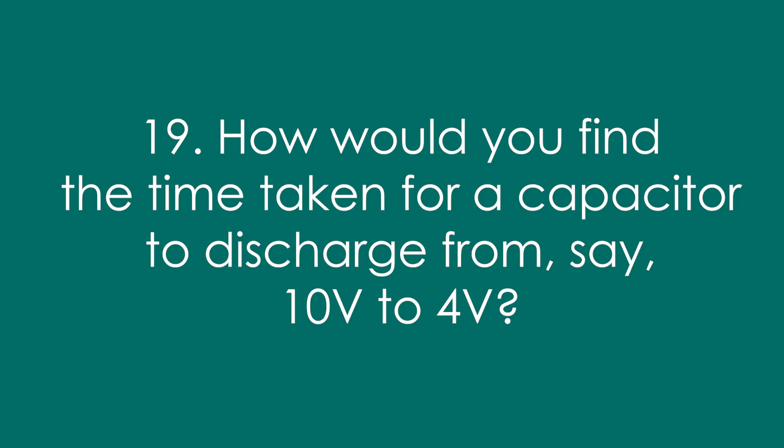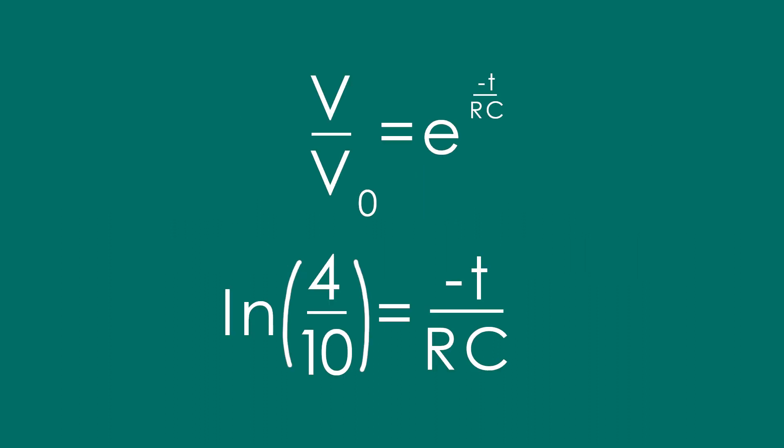Nineteen, how would you find the time taken for a capacitor to discharge from, say, 10 volts to 4 volts? We take our decay equation and we log both sides, that's natural log. So we have log of 0.4 equals minus T over RC, just rearrange to find T.